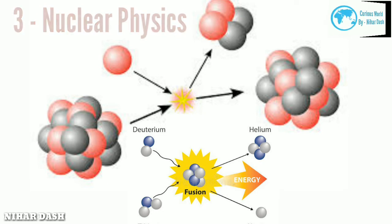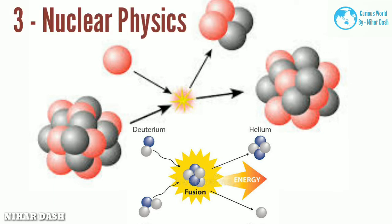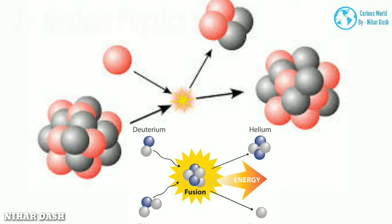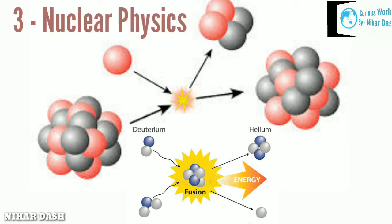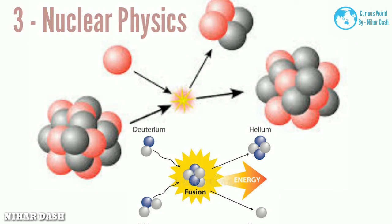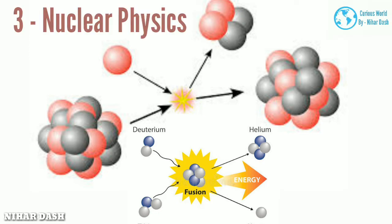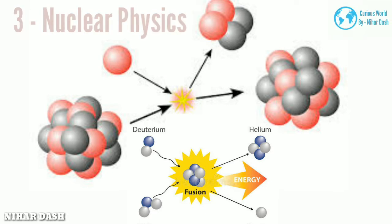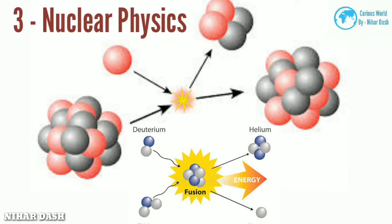Three: Nuclear Physics. This is a branch of physics that is concerned with the constituents, structure, behavior, and interactions of atomic nuclei. This branch is different from atomic physics, which studies the atom including its electrons. In contemporary times, nuclear physics has become a very broad area of study and extended its scope manifold. Its methodologies and principles are applied in power generation, nuclear weapons, magnetic resonance imaging, medicines, and industrial and agricultural isotopes.